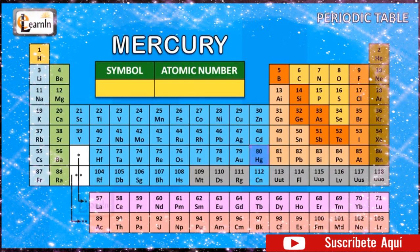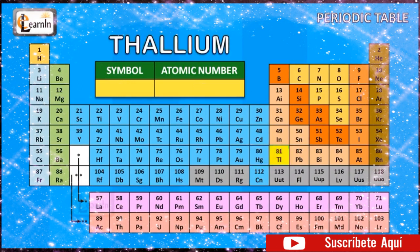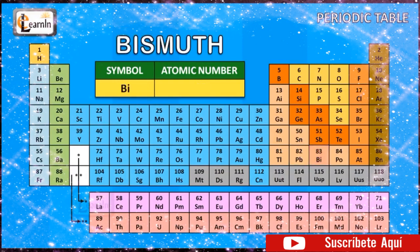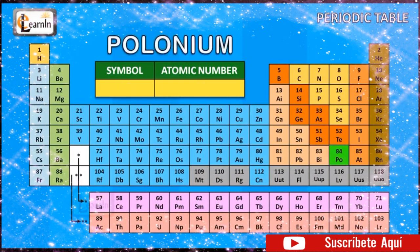The element mercury is represented as Hg and has an atomic number of 80. The element thallium is represented as Tl and has an atomic number of 81. The element lead is represented as Pb and has an atomic number of 82. The element bismuth is represented as Bi and has an atomic number of 83. The element polonium is represented as Po and has an atomic number of 84.